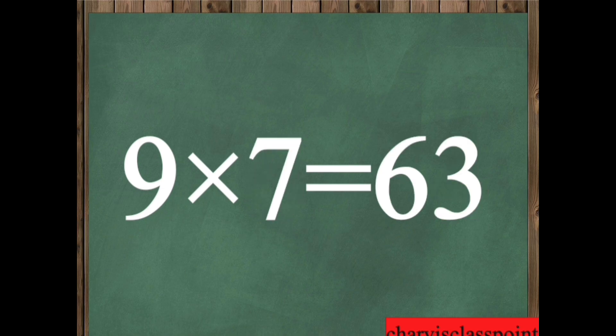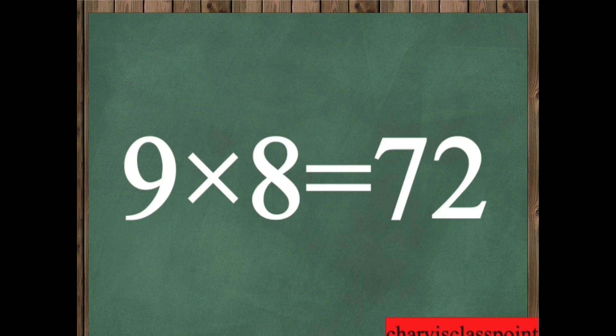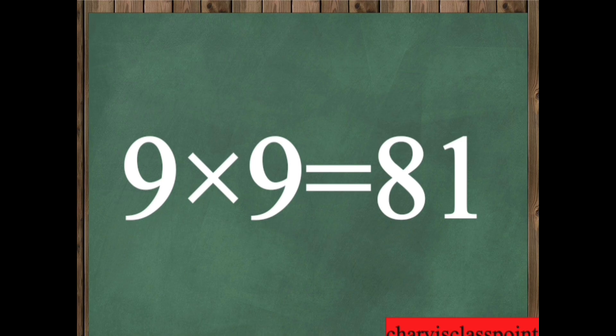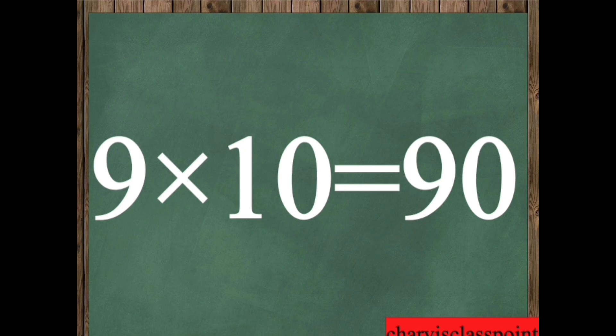Nine, seven is sixty-three. Nine, eight is seventy-two. Nine, nine is eighty-one. Nine, ten is ninety.